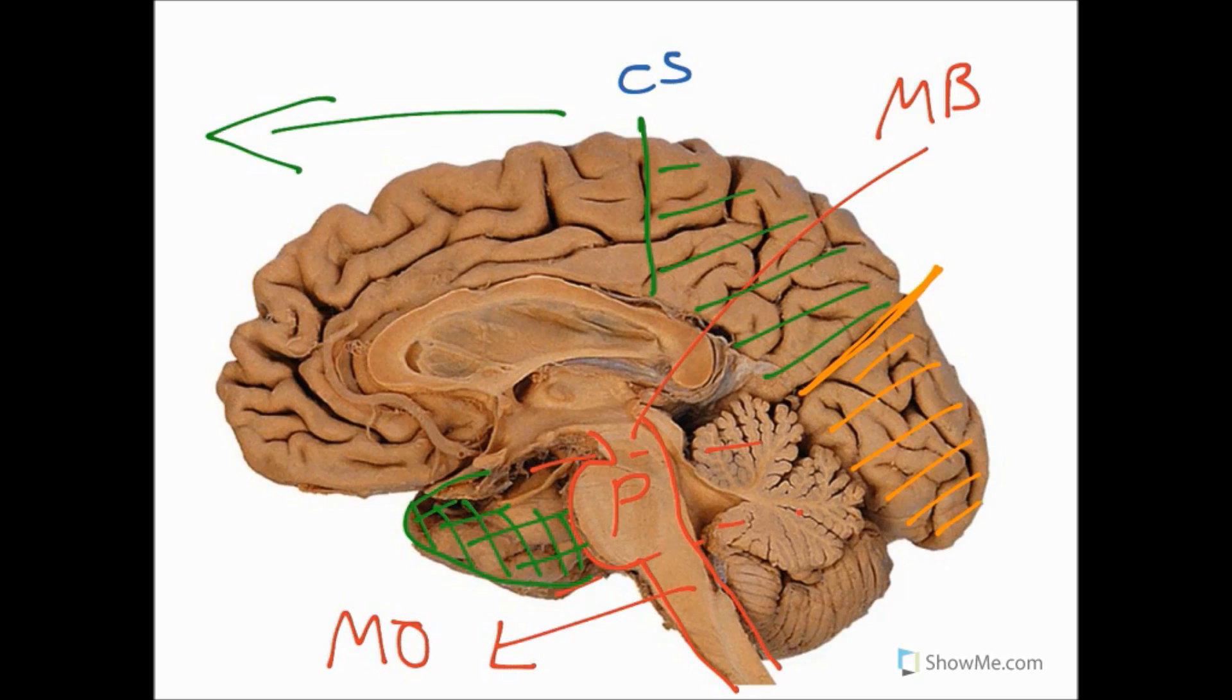You'll also see we have another sulcus that's rather obvious, and this is our calcarine sulcus. Our calcarine sulcus is only visible from a medial view, so you need a sagittal slice to see it. You can't see it from a lateral view. And the calcarine sulcus is important because it's around the region here that we have our primary visual cortex. Our primary visual cortex is where we process all the information that we see from our eyes.